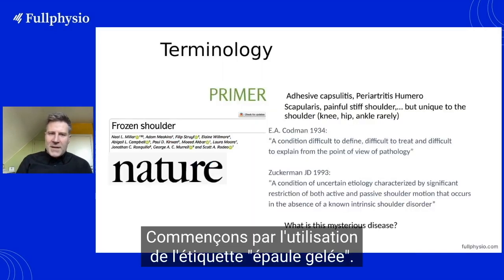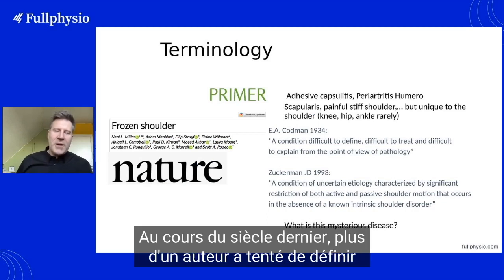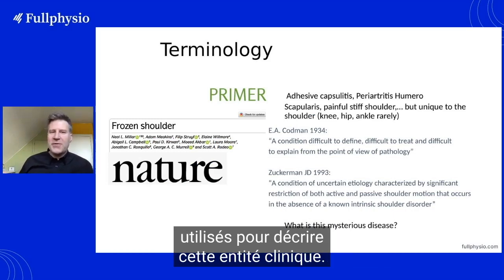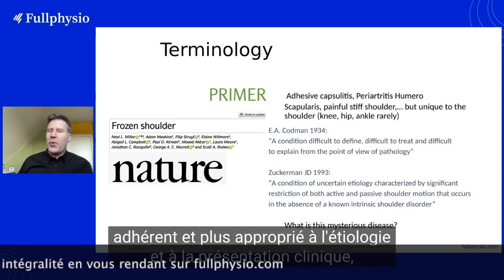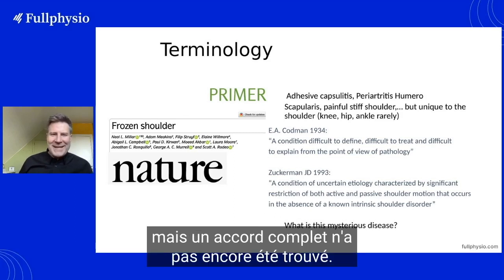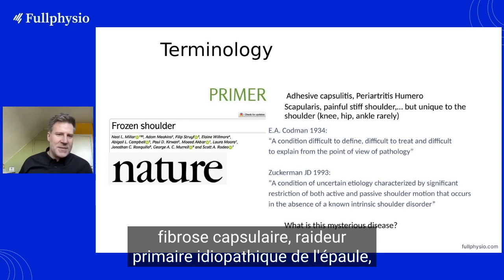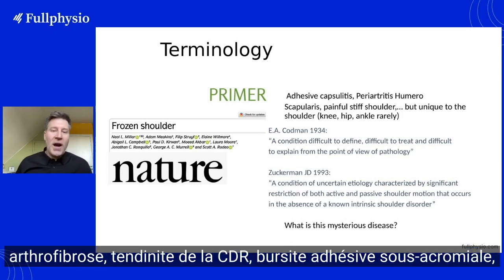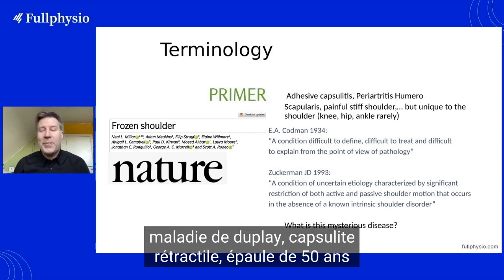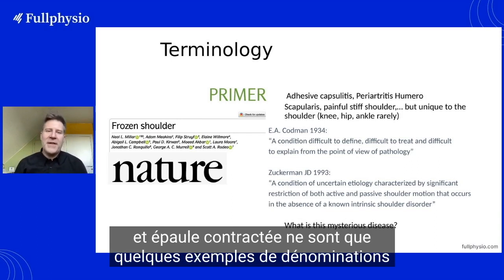Let us first start with the use of the label 'frozen shoulder.' Over the last century, more than one author tried to define frozen shoulder and various terms were used to describe this clinical entity. All authors tried to deal with naming that should be more adherent and appropriate to the etiology and clinical presentation, but complete agreement has not yet been found. Terms such as adhesive capsulitis, fibrotic capsulitis, primary idiopathic stiff shoulder, periarthritis of the shoulder, stiff and painful shoulder, arthrofibrosis, tendinitis of the short rotator, subacromial adhesive bursitis, duplex disease, capsulitis retractile, 50-year-old shoulder, and contracted shoulder are just some of the examples of namings that were proposed.